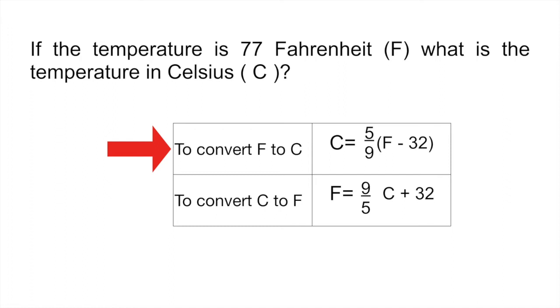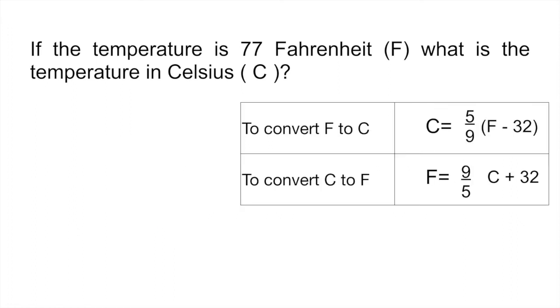C is equal to 5 ninths multiplied by Fahrenheit minus 32. And if you wanted to do the opposite thing, to convert a temperature from Celsius to Fahrenheit, you would use that equation. In the question, what it's asking us is to change the temperature from Fahrenheit to Celsius. So we would use that first formula, and you can basically ignore the one at the bottom.